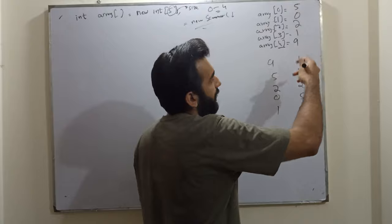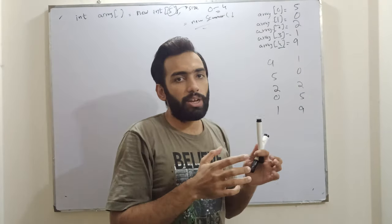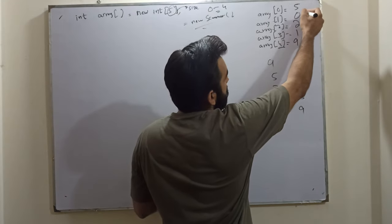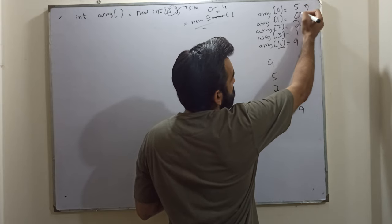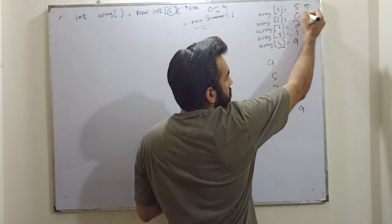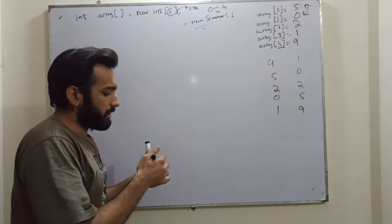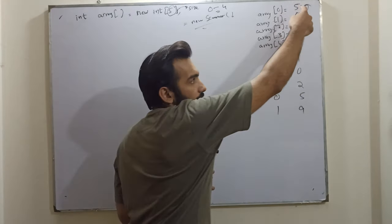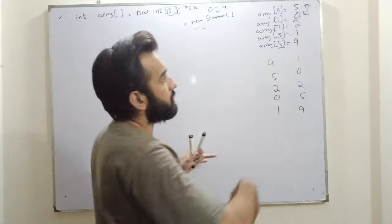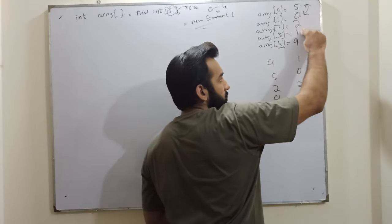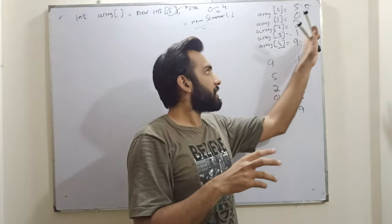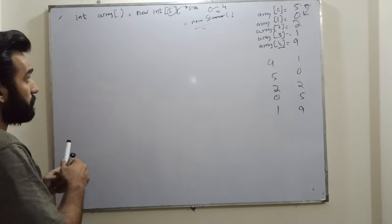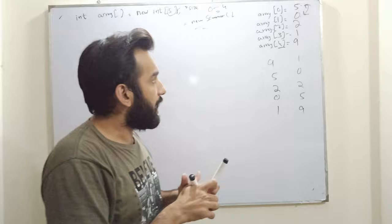What bubble sorting does is basically swap the elements and convert the array into a sequence. For example, if I check that this element is less than this element, then swap them. It will check: is 5 less than 0? Then 0 will be placed where 5 was and 5 will be checked against the next element. At some point, 5 will reach its correct position.